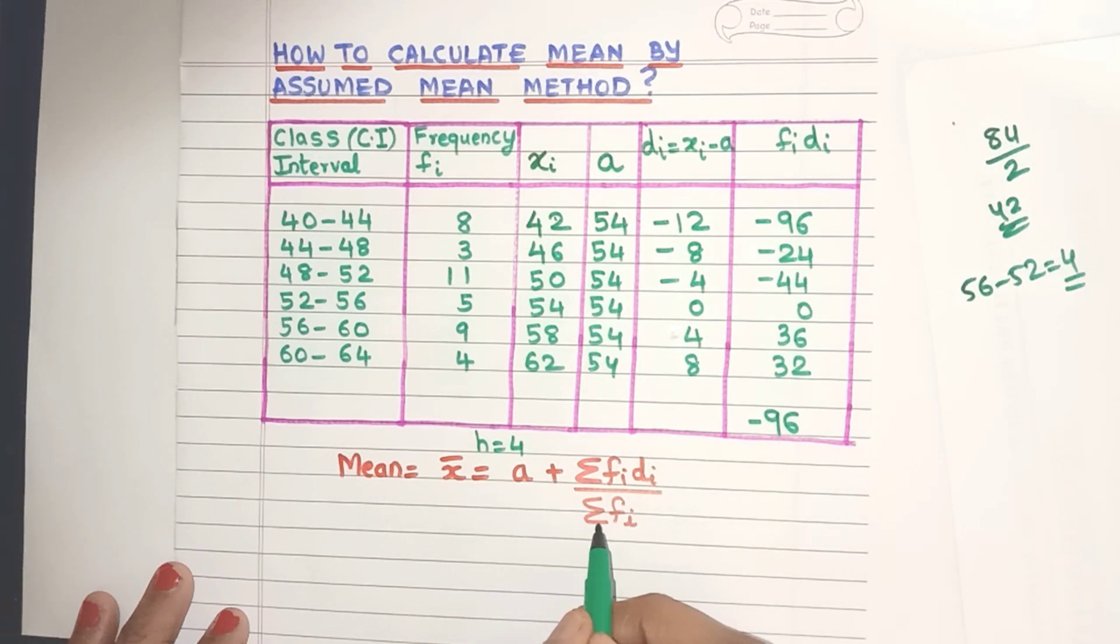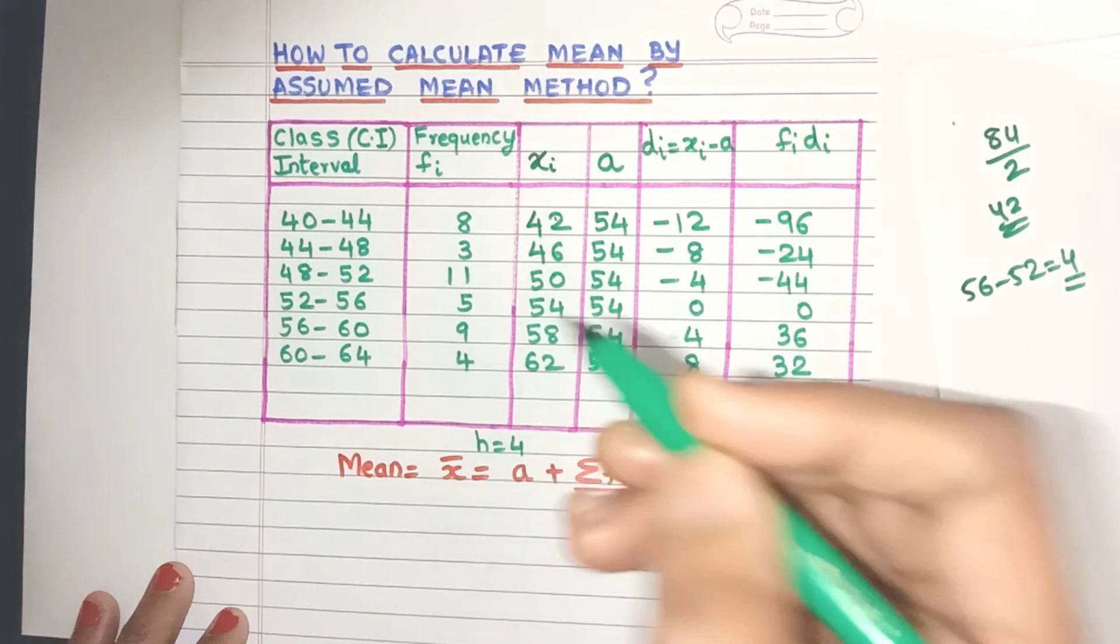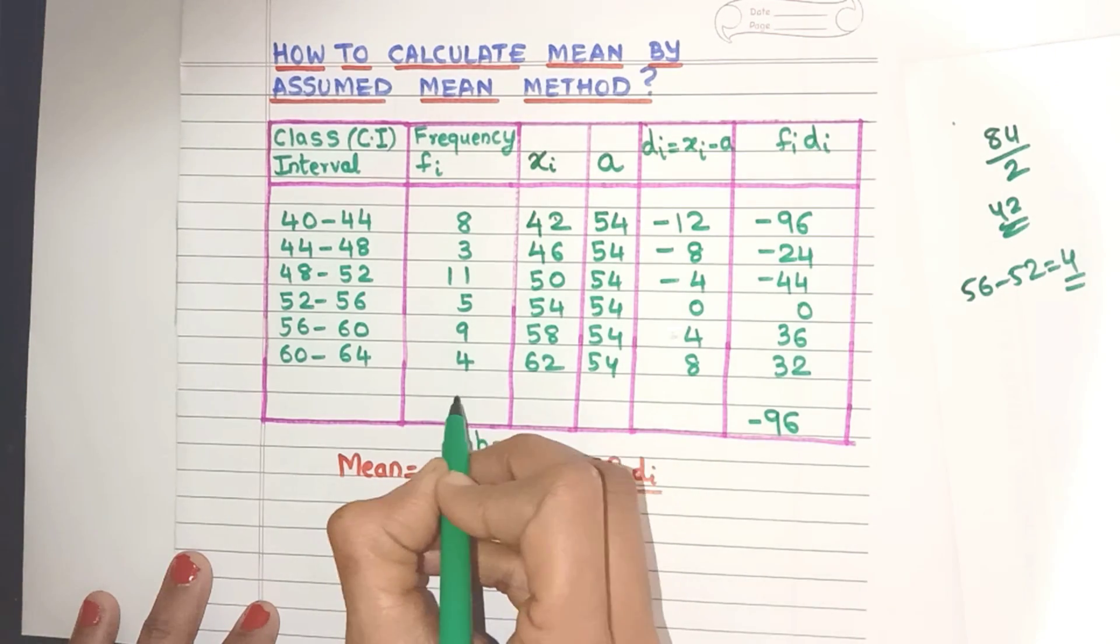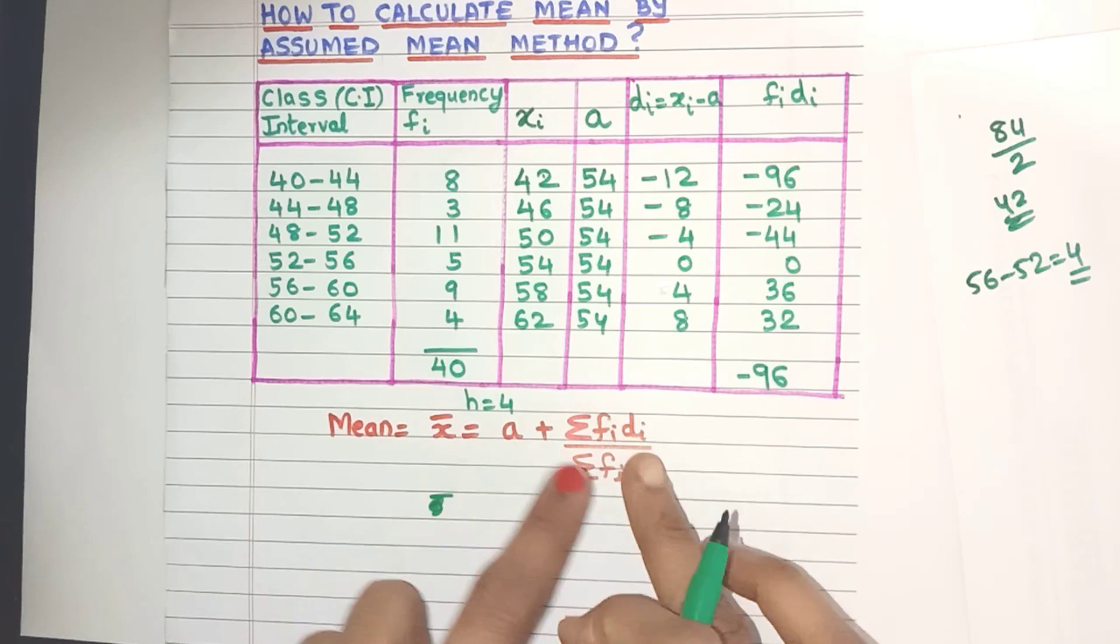Now again, the formula says sigma fi. That means I need to add all the frequencies. Now I've already done that. It comes to 40. So now we have all the values ready.